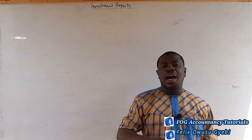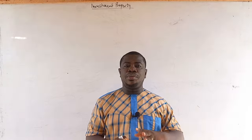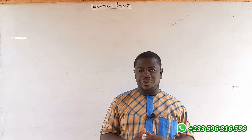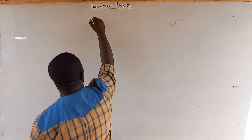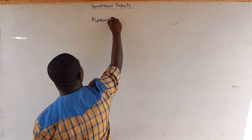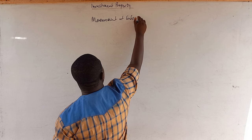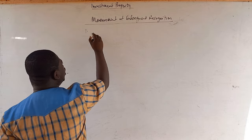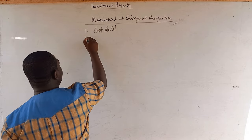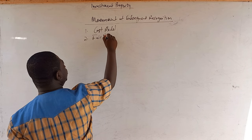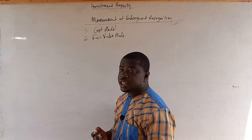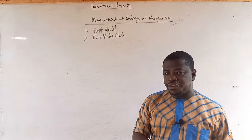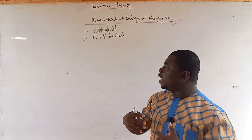At initial recognition the measurement approach is the cost model, but subsequently you have two options: it's either you go by the cost model or you go by the revaluation model — also called the fair value model. So measurement at subsequent recognition gives us options to go by the cost model or the fair value model. I said in the previous video that the cost model under subsequent recognition will be quite different from that of initial recognition, and this is what I mean.